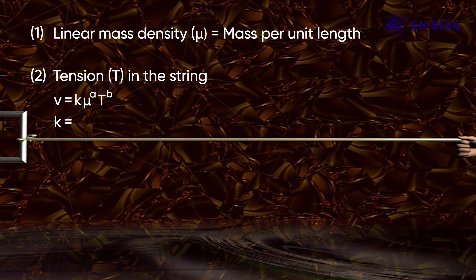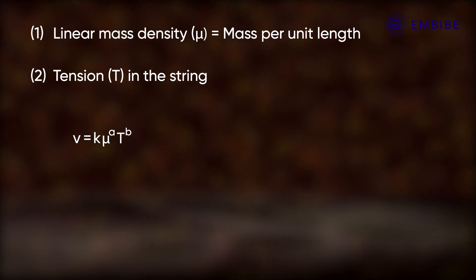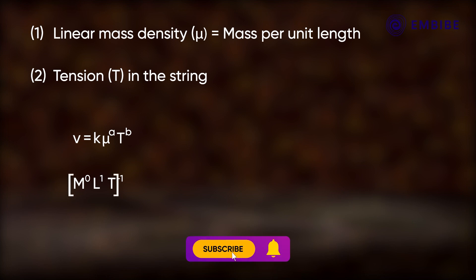Here k is equal to a dimensionless constant. Substituting dimensions on both sides: M to the power 0, L to the power 1, T to the power minus 1 is equal to...